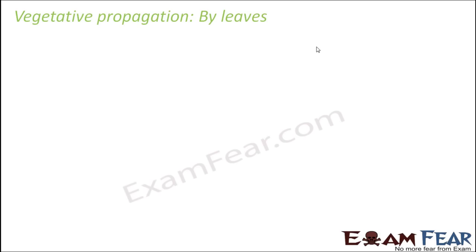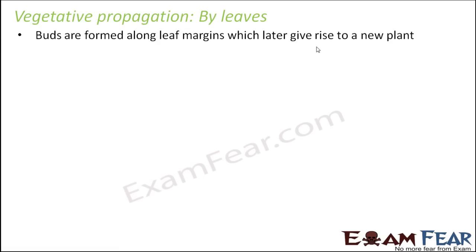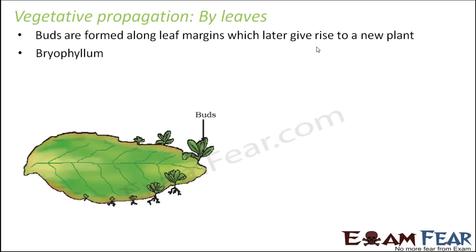Next is vegetative propagation by leaves. This sounds quite interesting because not many would imagine leaves giving rise to a new plant. There are specialized leaves where buds are formed along the leaf margins which later give rise to a new plant. One such example is bryophyllum. Along the leaf margin — the boundary of the leaf — the buds are capable of giving rise to a new plant altogether.